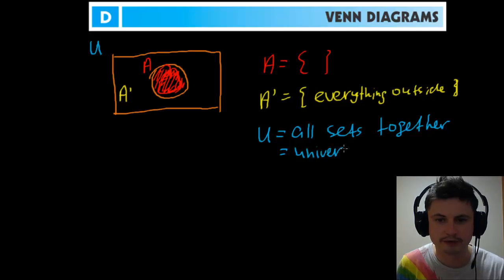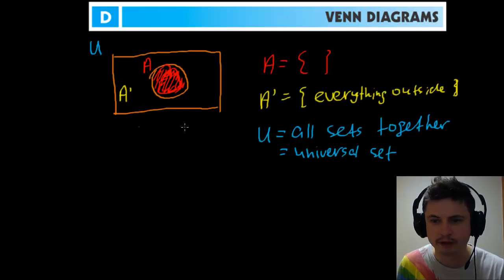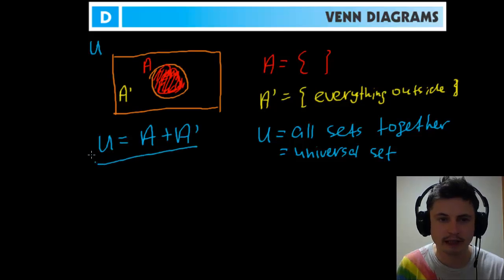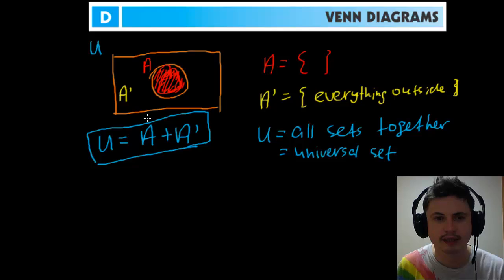U is all stuff together, all sets together, and we also call this the Universal Set. If you want to be mathematical about it, you can rewrite this as U equals A plus A prime. So basically this is what Venn diagrams are — essentially it's a visual way of representing various sets and various numbers inside those sets.